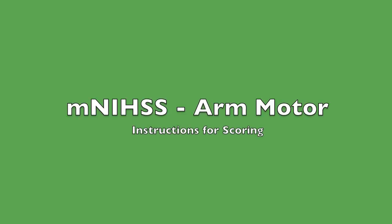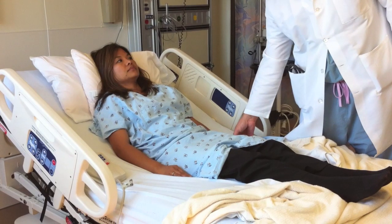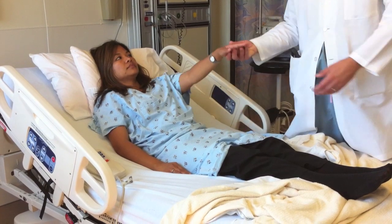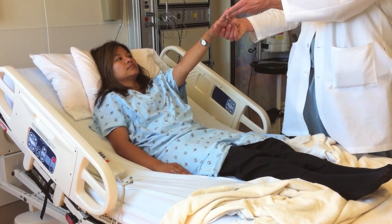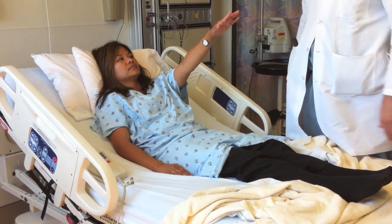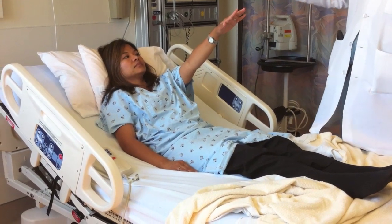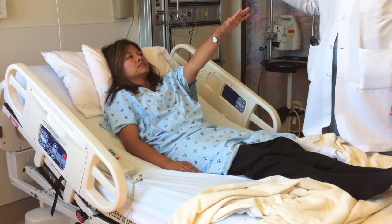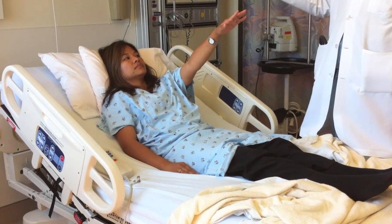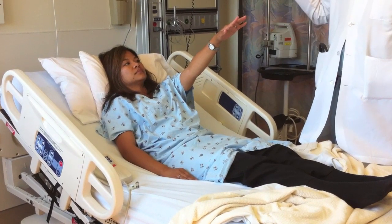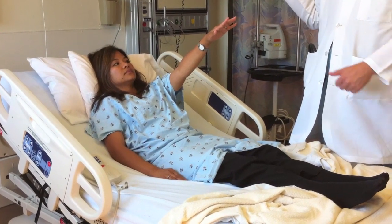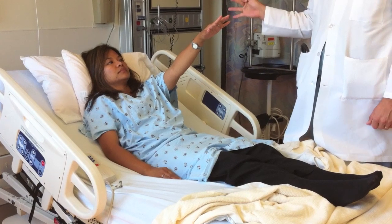This video shows how to score the modified NIH Stroke Scale arm motor section. With the patient in the hospital bed, the arm is placed at approximately 45 degrees with the palm down, and the patient is instructed to hold the arm still for 10 seconds.